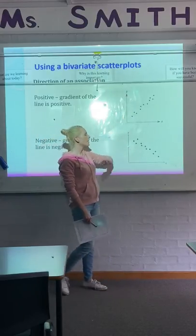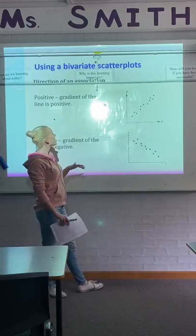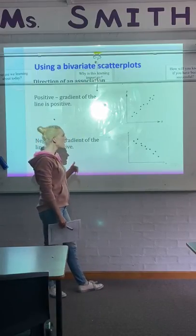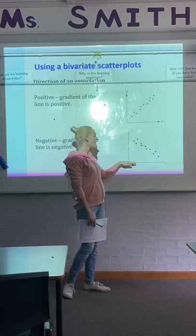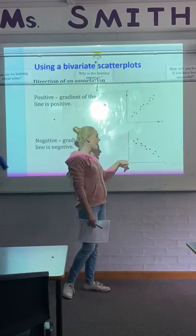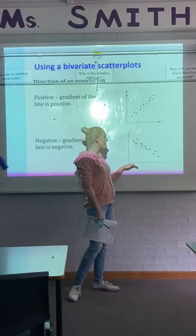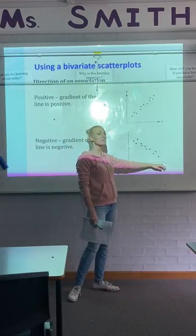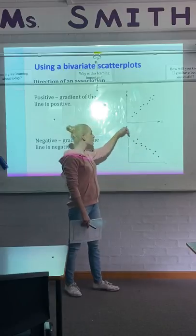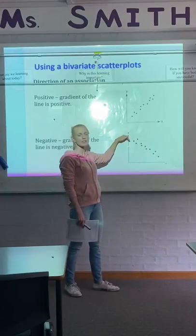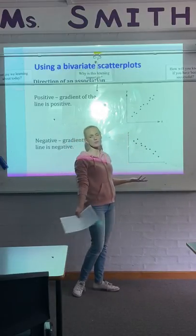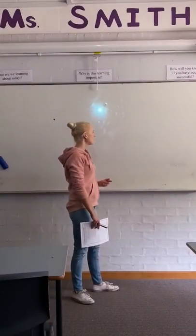An example of something that has a negative association is, say, you've got the number of people painting the house. As you increase the number of painters painting the house, the time that it takes to paint the house would obviously decrease if there's more people painting.